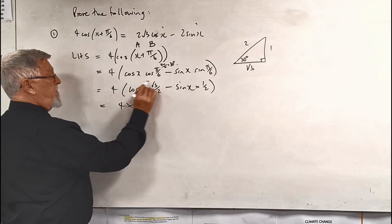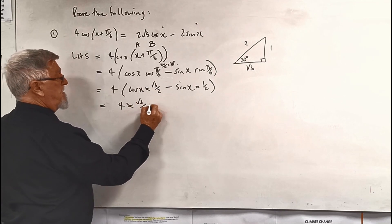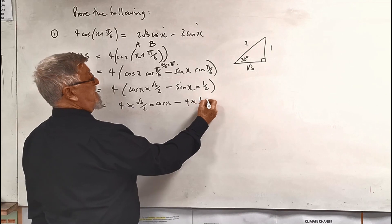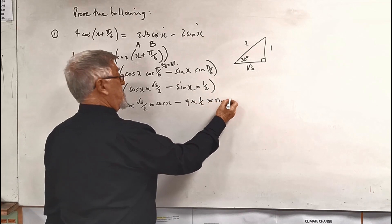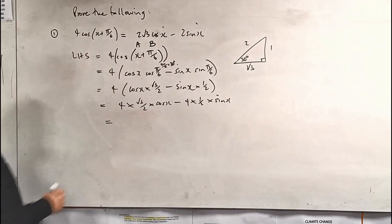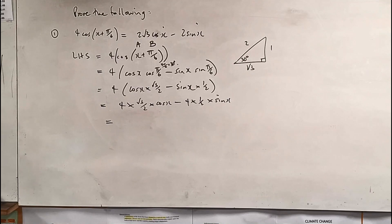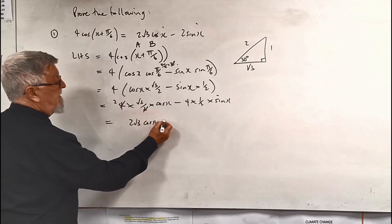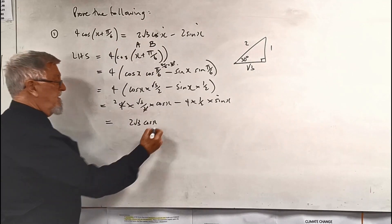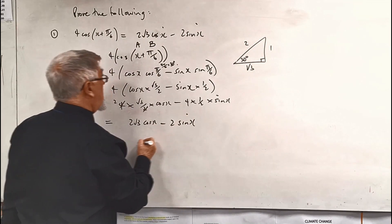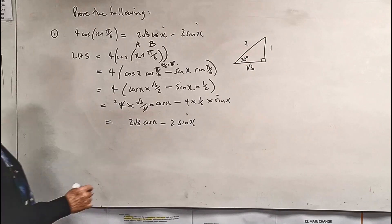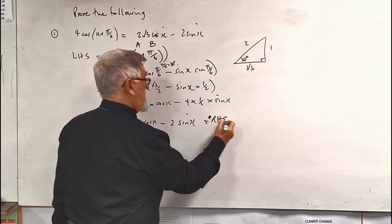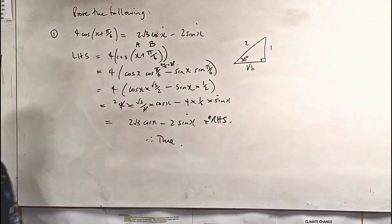Now expand the brackets. What do we have? I'm going to write the four first, I'm going to write the √3/2 second, I'm going to put the cos x. I'm going to write the four first, I'm going to write the half second, I'm going to write the sine x third. And then because of people's trouble with fractions, the two can cancel with a four and we're left with 2√3 cos x.